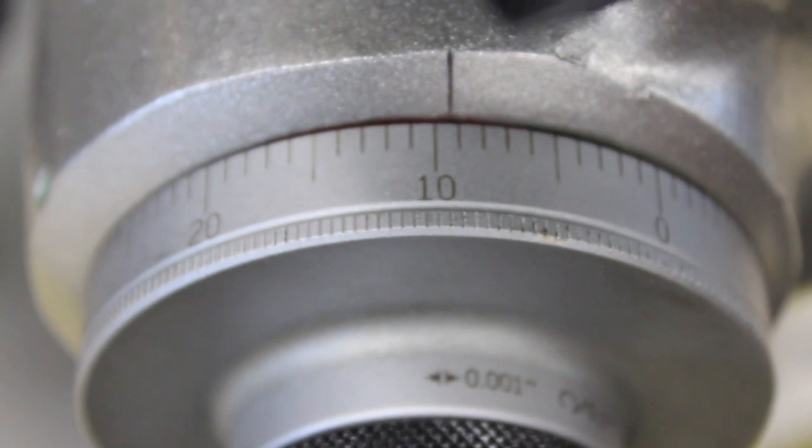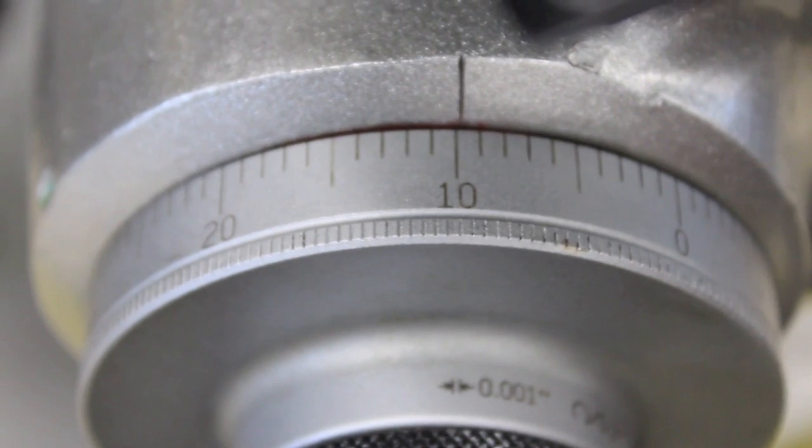With the cutter clear of the cutting surface, raise the table ten thousandths. Carefully begin to move the fly cutter across the surface of the part.